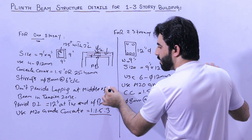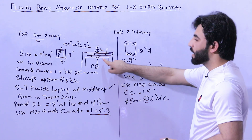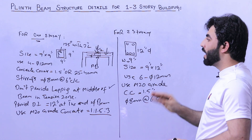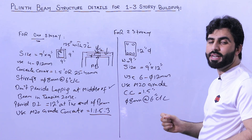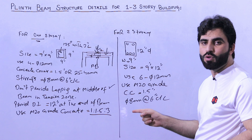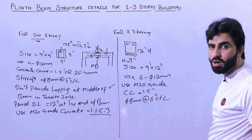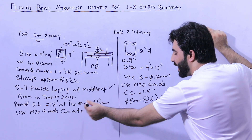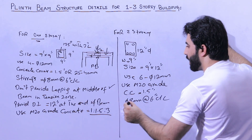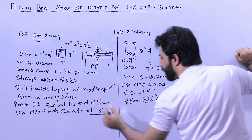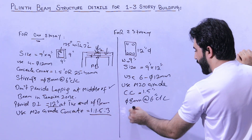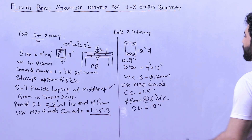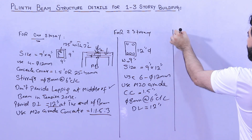Do not provide lapping length at the bottom portion. If you require lapping at the top portion, you are not allowed to provide it at a distance of L by four — you can provide it at the junction between beam and column. Provide development length which should not be less than 12 inches. Use M20 grade concrete as already discussed.